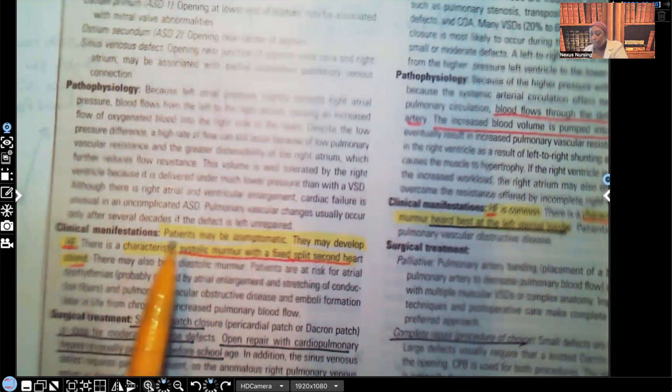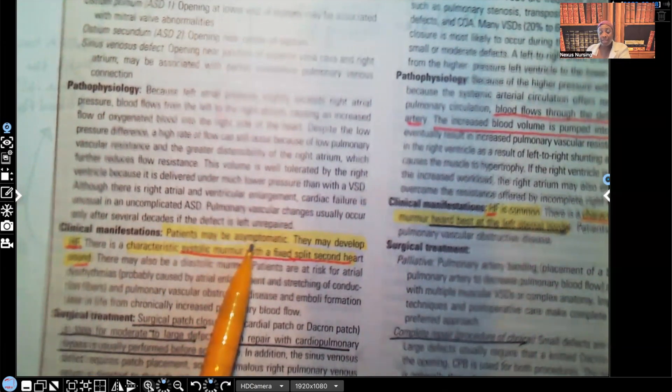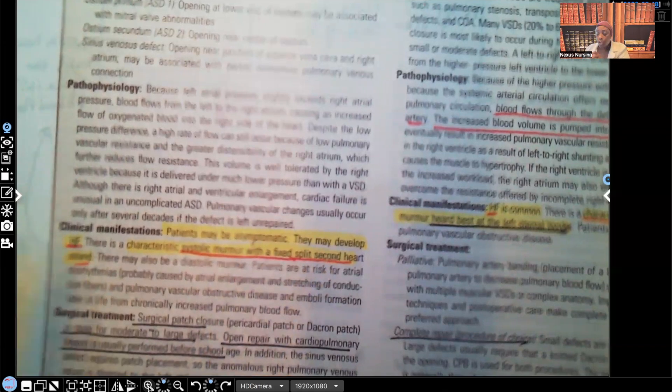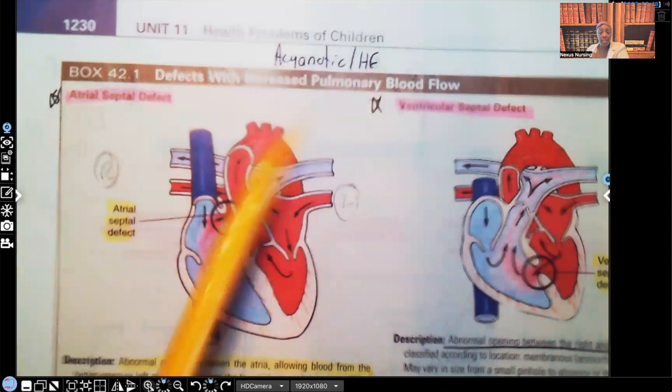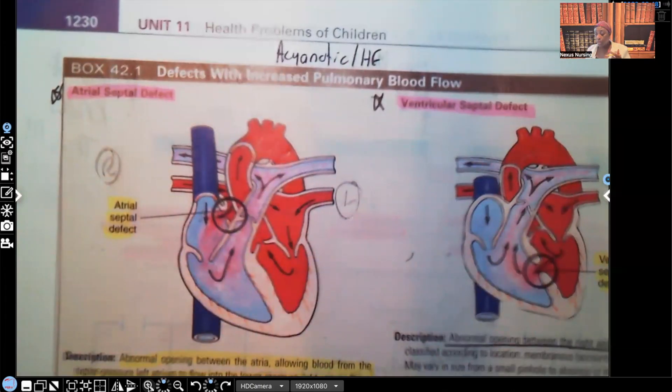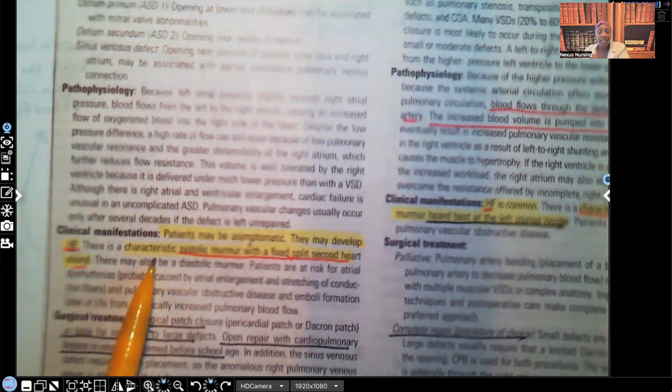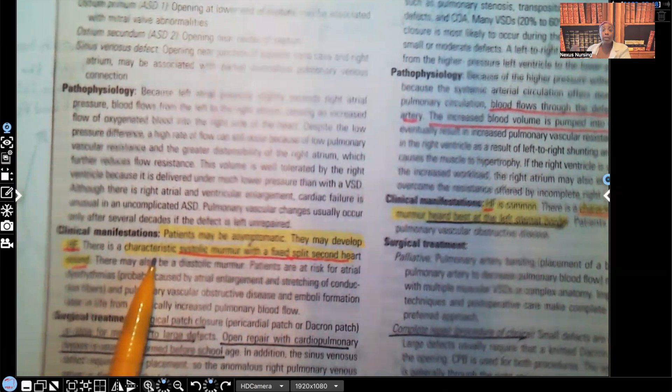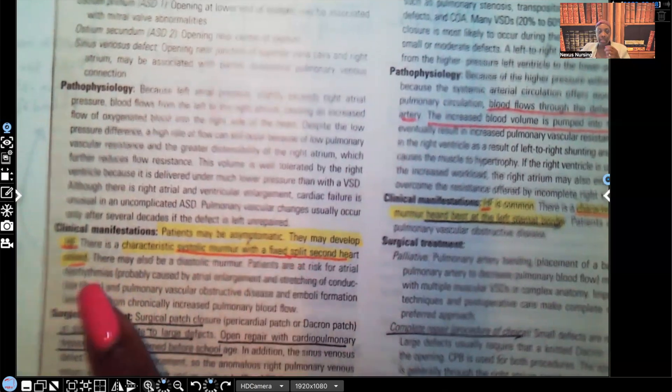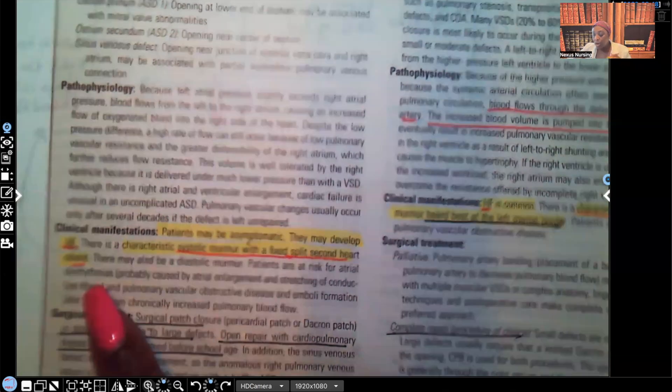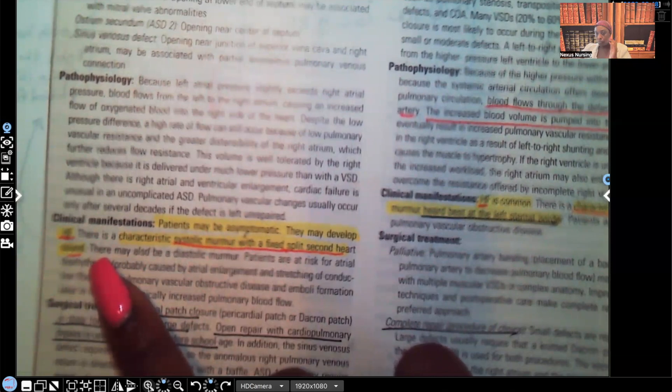Let's move on to clinical manifestations of atrial septal defect. Patients may be asymptomatic. We may not even see any symptoms. Remember they're still getting some of that oxygenated blood that's mixing with the unoxygenated blood. They may develop heart failure, and that's why I put acyanotic and heart failure, because you need to remember they're not turning blue and they're at risk for heart failure. There is a characteristic systolic murmur with a fixed split second heart sound. You see this, you better be thinking atrial septal defect.